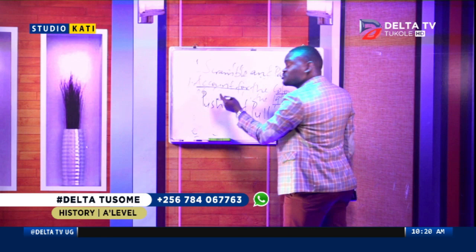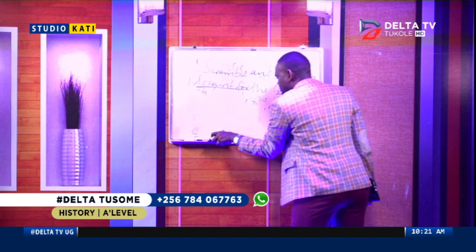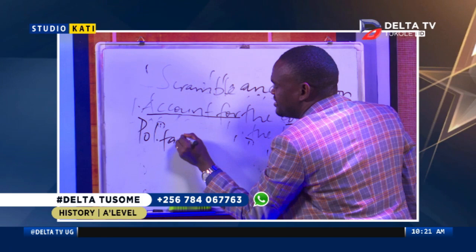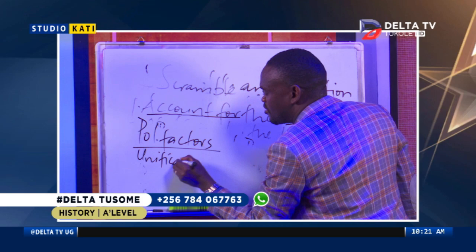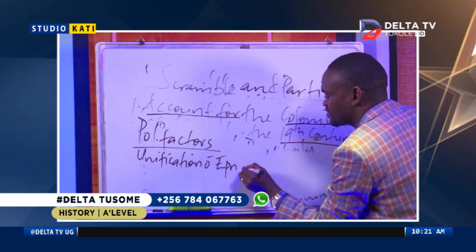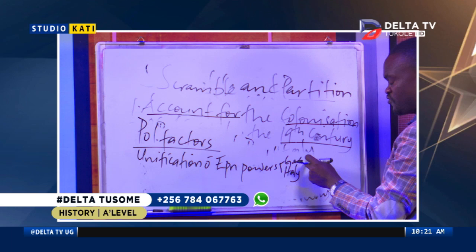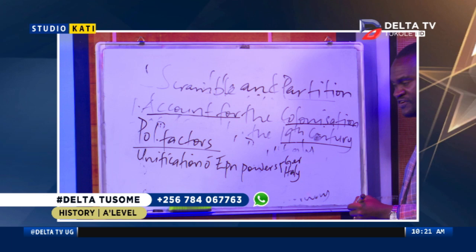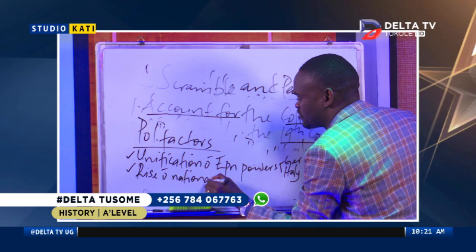Because it is a direct question that does not require a standpoint, I'll give you a sample of some of these factors. Under political factors, we can talk about the unification of European powers — with focus on Germany and Italy. In European History Paper 3, senior sixes have already studied that the unification of these two countries had been accomplished by 1870. You can go ahead and talk about the rise of nationalism, which was directly a result of the unification of European powers, using the example of Germany and Italy.